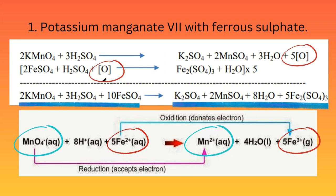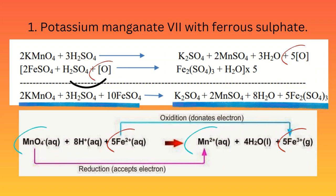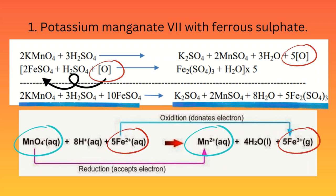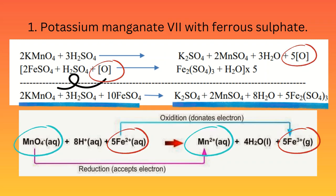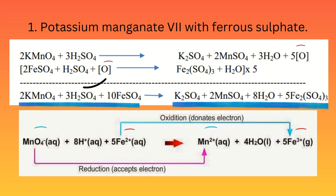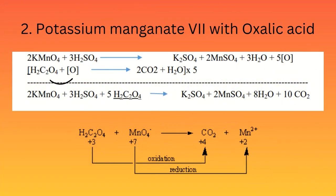In this reaction, the oxidation state of iron increases and the ferrous Fe2+ ion is converted to the ferric Fe3+ ion, meaning iron is oxidized. Meanwhile, the oxidation state of manganese decreases and the Mn7+ ion is converted to the Mn2+ ion, meaning manganese is reduced.